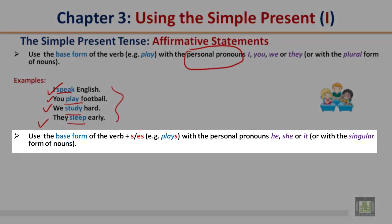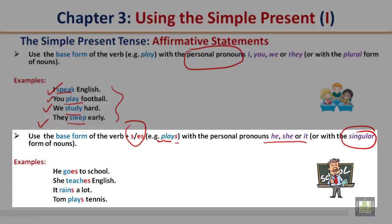Another example: use the base form of the verb plus S or ES. So play is the base form, form an S with the personal pronouns he, she, or it, or with the singular form of nouns. Examples: he goes to school - the he is a personal pronoun and goes has an ES. She teaches English. Teach is the base form, you add the ES, and the personal pronoun is she. It rains a lot. Tom plays tennis. Two other examples that are similar, but with these only the S is added.